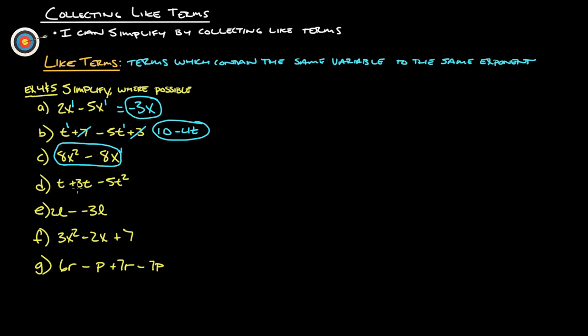t plus 3t minus 5t squared. So this is t to the first, t to the first, t to the second. This negative 5t squared is not going to play with those other ones—it's a different exponent.